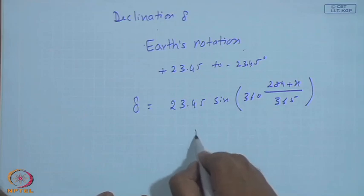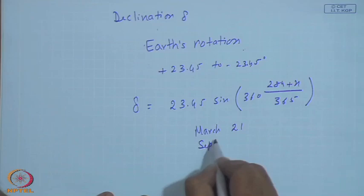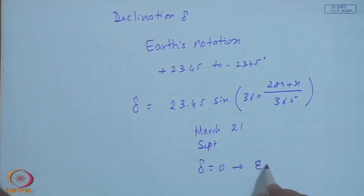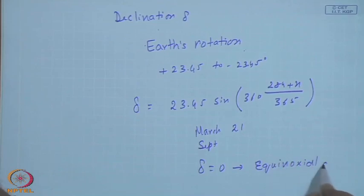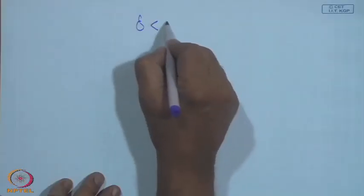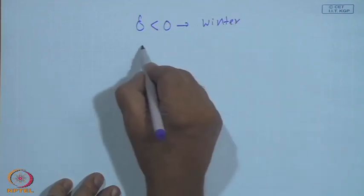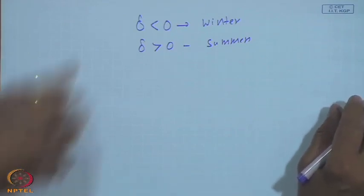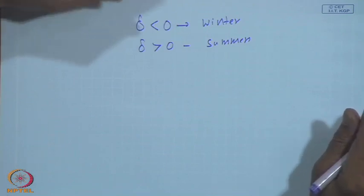You can verify: for March 21st and September 21st, if you put in the appropriate N, you will get delta = 0. These are called the equinoctial days. Similarly, at the summer solstice in June 21st and winter solstice December 21st, you have maximum +23.45 and minimum −23.45 degrees respectively. Broadly, delta < 0 may be called winter, and delta > 0 as summer.